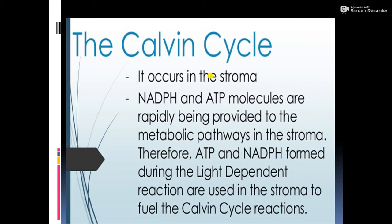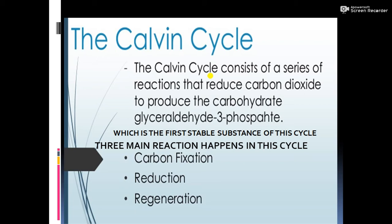First, let's learn about the Calvin cycle. It occurs in the stroma. NADPH and ATP molecules are rapidly provided to the metabolic pathways in the stroma, and the ATP and NADPH formed during the light dependent reaction are used to fuel the Calvin cycle reactions. The Calvin cycle consists of a series of reactions that reduce carbon dioxide to produce carbohydrates and glyceraldehyde-3-phosphate, which is the first stable substance of the cycle.